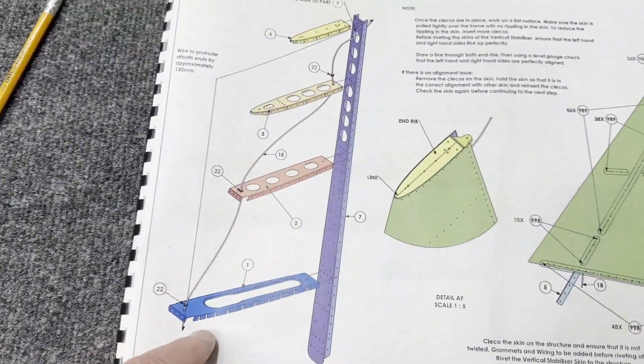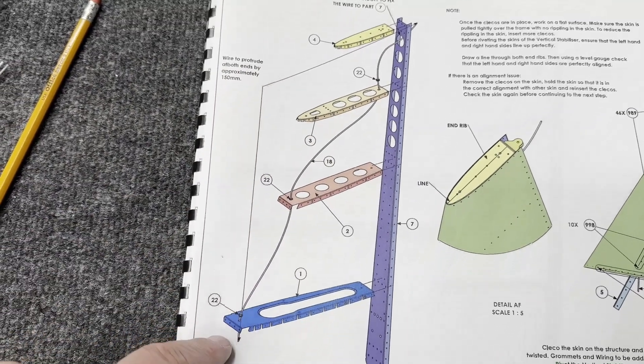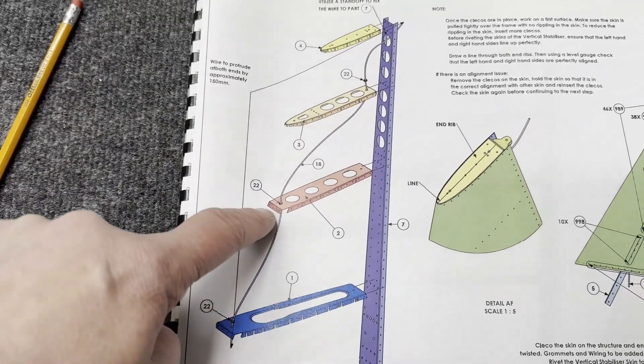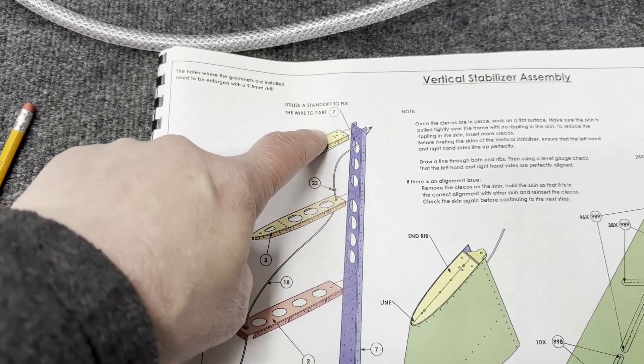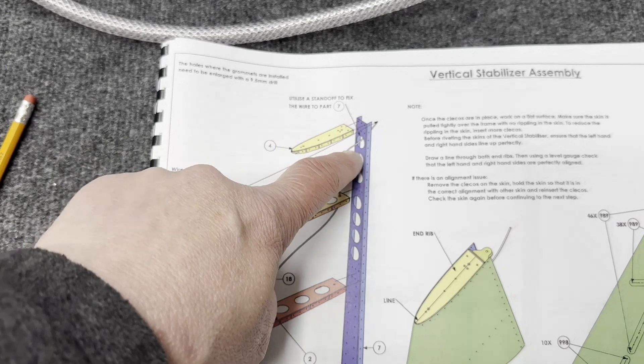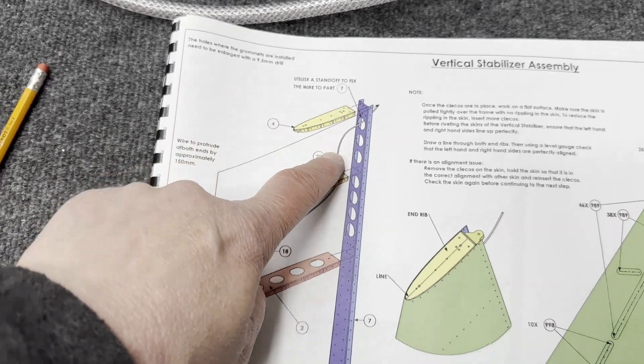Here you can see the instruction. Sling recommends front front rear out and then use a standoff to hold this wire. That's what we did on that instruction there.